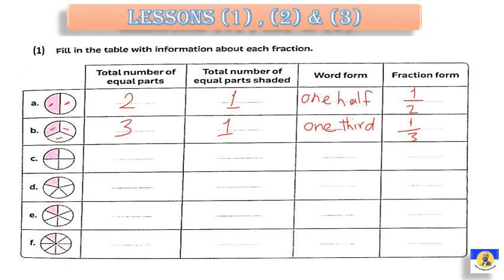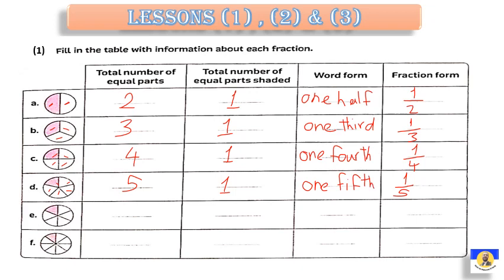The next one — how many parts? Yes, 1, 2, 3, 4. So, we have 4 parts. Only 1 part shaded. So, it will be 1 fourth. 1 fourth — يعني 1 over 4. Letter D: how many parts here? Yes, 1, 2, 3, 4, 5. So, you have here 5 parts. One of them is shaded. So, it's called 1 fifth.